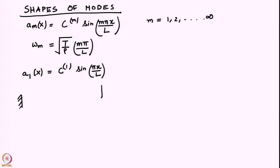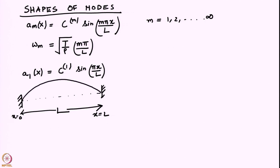The first mode a_1 of x is c times sin(pi x / L). These are two walls separated by a distance L, and the first mode is just a half sine wave — it starts from zero at x equal to 0, goes up, and returns to zero at x equal to L. If you multiply by minus 1, the shape inverts — that is also an eigenmode. The frequency of this mode is square root of T by rho times pi over L.